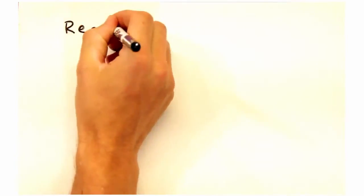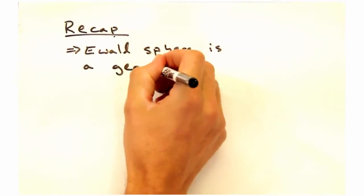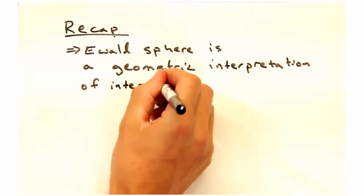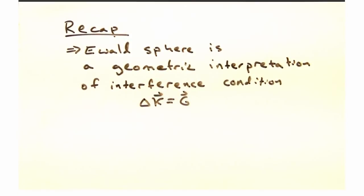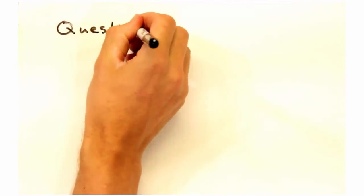So in short, the Ewald Sphere is a geometric interpretation of the delta k equals g interference condition. That's it in a nutshell. Later we're going to come back to this condition for different types of experimental scans. But for now we'll leave you with some questions to consider.